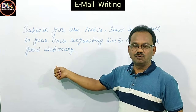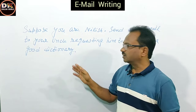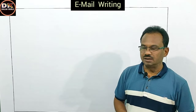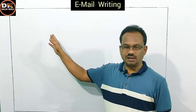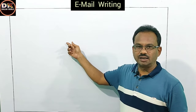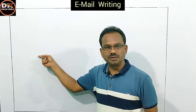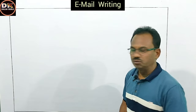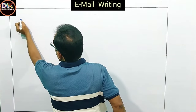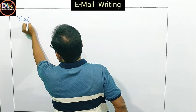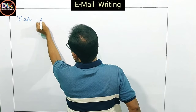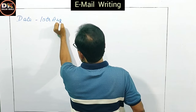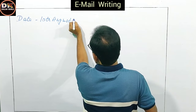To, and then what — date is to be mentioned. So let us see this answer. Email is written in a box — systematically, points, as I have told, it is the format I will use. So first: Date. Suppose — 10th August 2021.